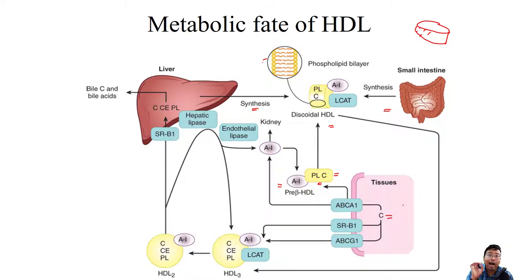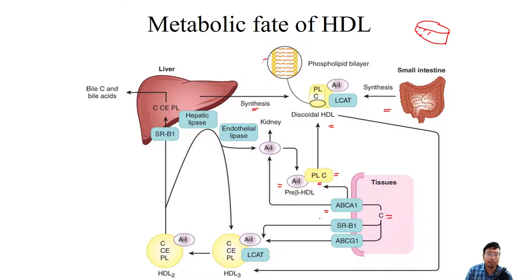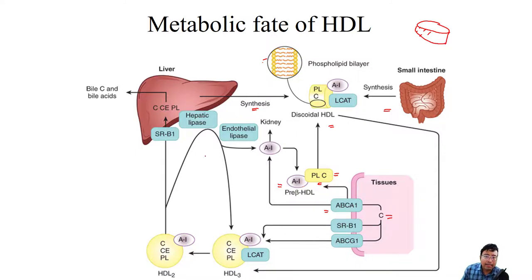Cholesterol can exit extra-hepatic tissue via three receptors. Number one is ABCA1 — ATP Binding Cassette protein receptor A1 — which requires ATP. When cholesterol comes out via ABCA1, it can donate its cholesterol to pre-beta HDL or directly to ApoA1. ApoA1 upon addition of phospholipid and cholesterol from extra-hepatic tissue via ABCA1 is converted to pre-beta HDL.